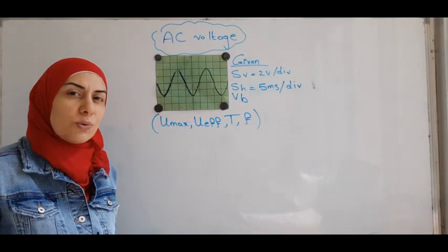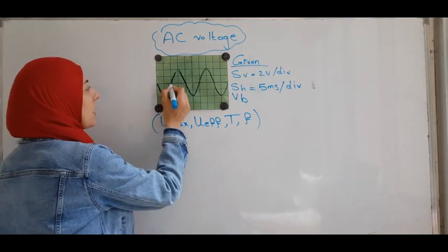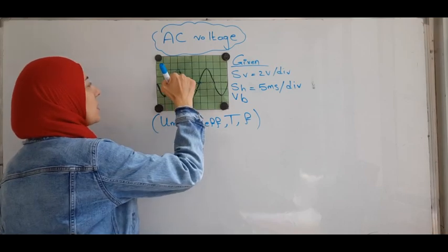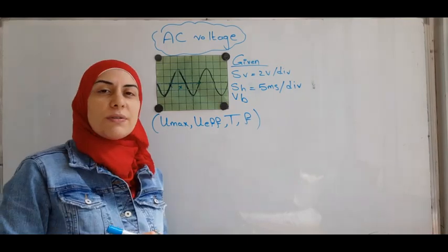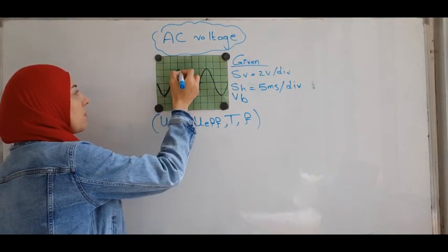From the graph, we can get two quantities, X and Y, where X is the number of divisions on the X axis corresponding to one cycle. So from here to here, this is one cycle, plus and minus. This is the number of divisions, X. Y is the number of divisions from the equilibrium position to the maximum point.